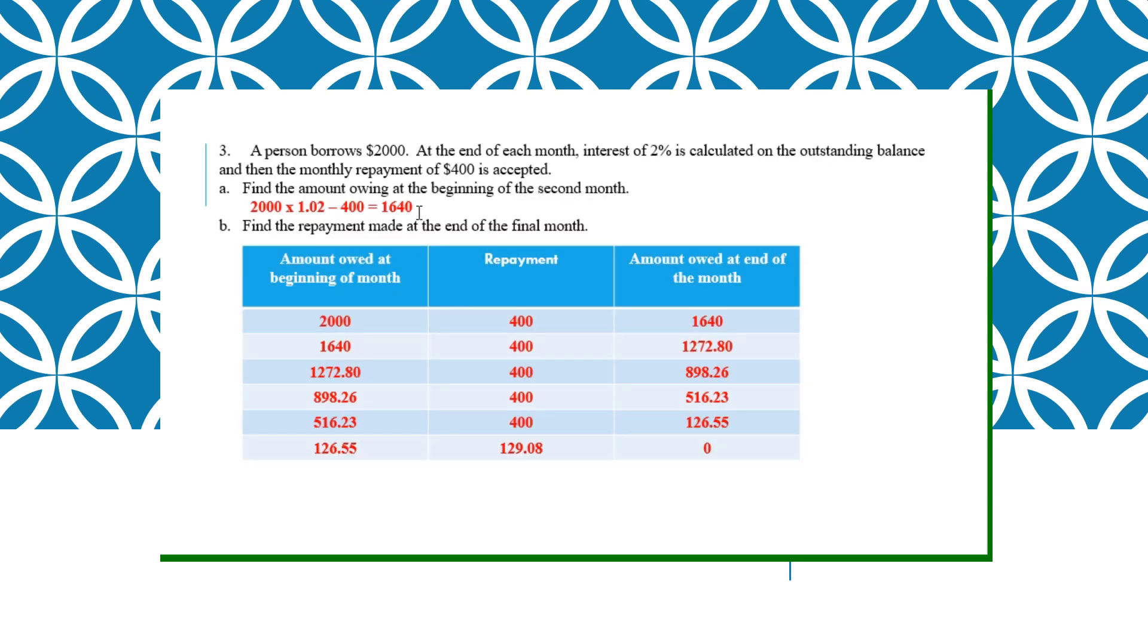Question 3. A person borrows $2,000 at the end of each month. Interest 2% is calculated on the outstanding and the repayment is $400. Find the amount at the beginning of the second month. So interest is 2% calculated on the outstanding. They already gave you the monthly interest so you don't need to think about it so much. You just apply 2,000 times 1.02 minus repayment will be the value. So find the repayment made at the final month. You will need to put this table down all together one by one.